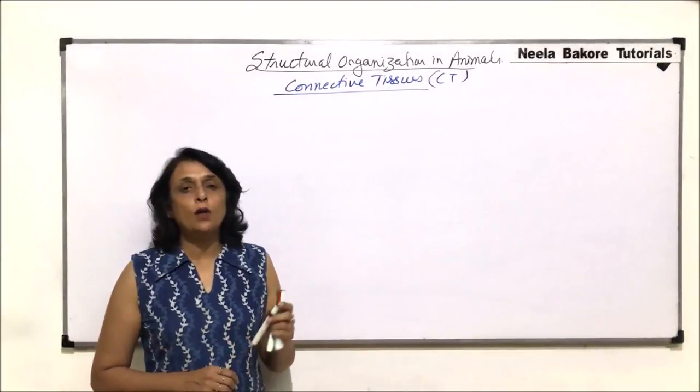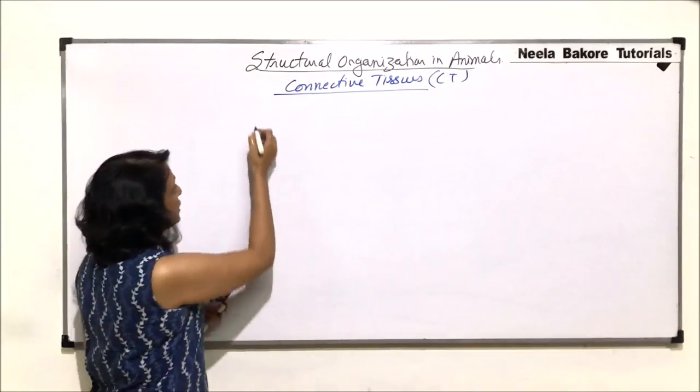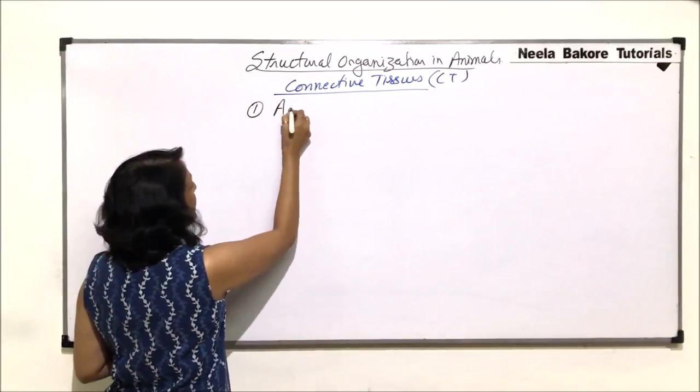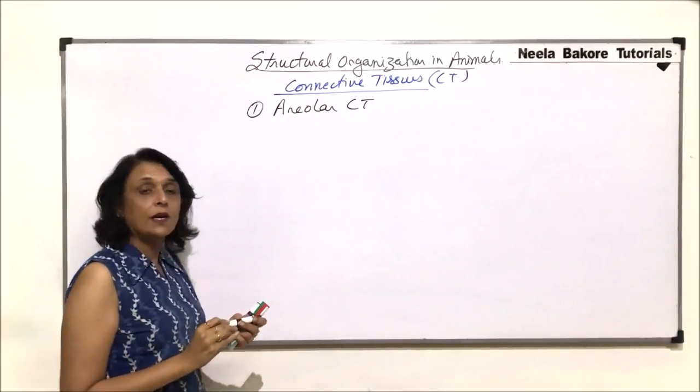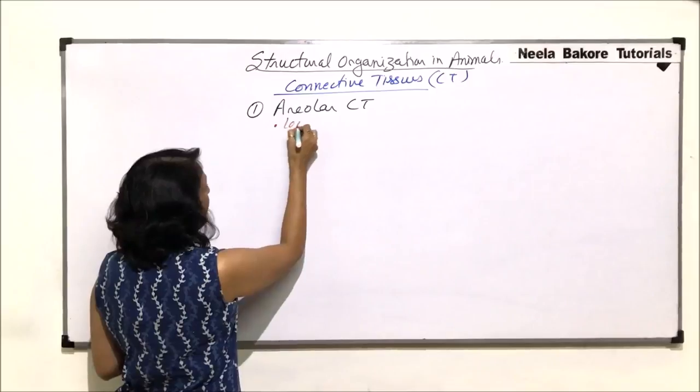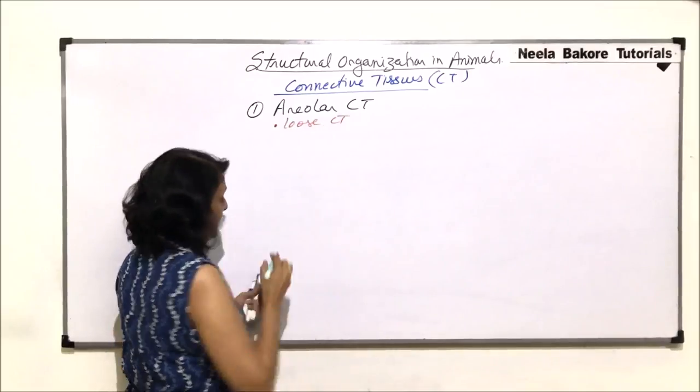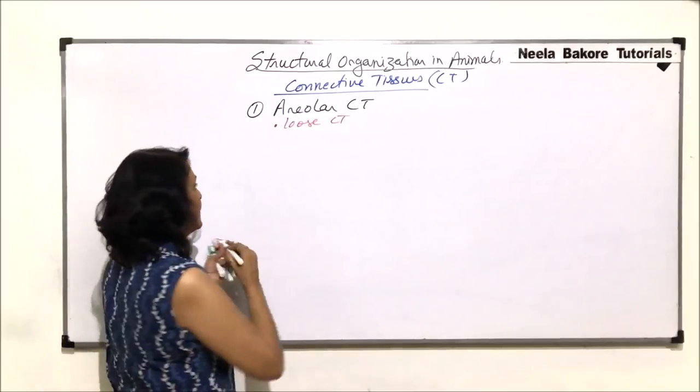We will now take up all these tissues which we have discussed earlier one by one. The first one that we are talking of is areolar connective tissue. Areolar connective tissue is a loose connective tissue and it has three different types of cells.